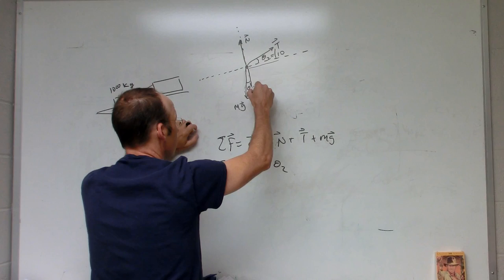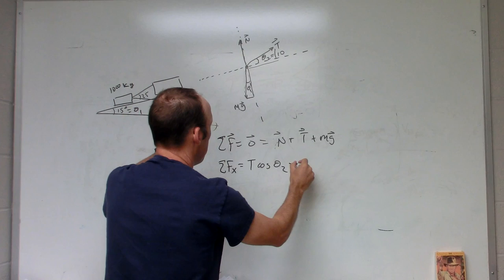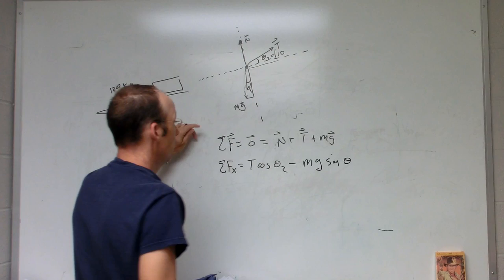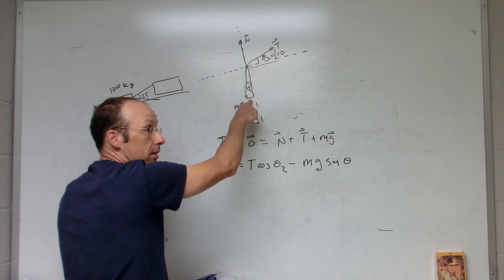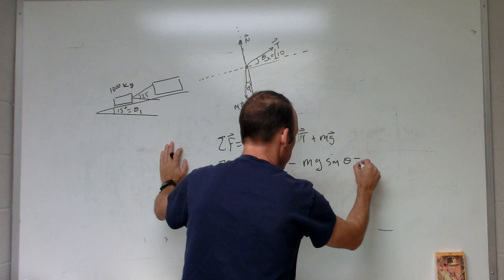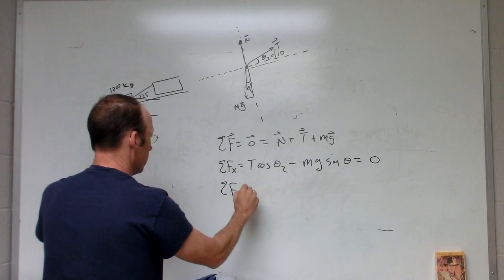So this is going to be minus mg sin(θ1). It's minus because this is in the negative x direction, and it's sine because I'm dealing with the opposite side—sine is opposite over hypotenuse—and that equals zero. Then I can do the same thing for the y direction. N is all in the y direction.